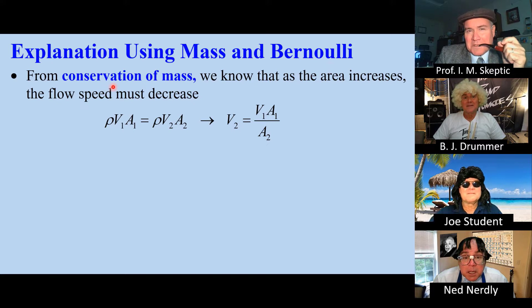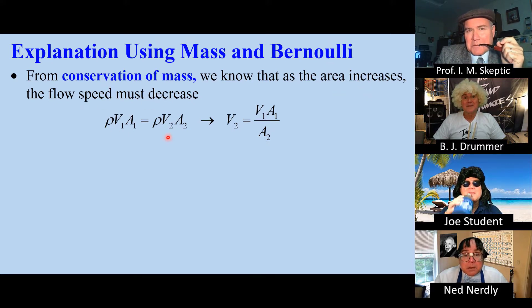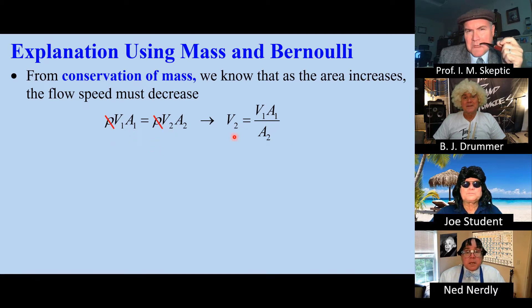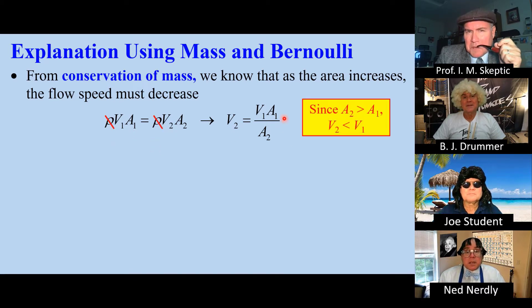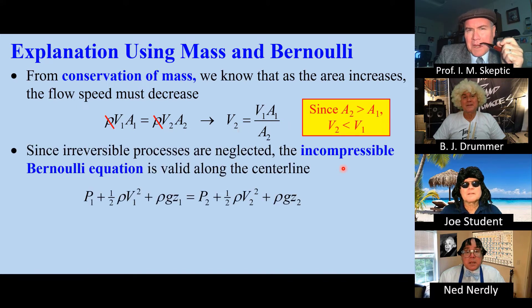From conservation of mass, as area increases, flow speed decreases. Here's the equation. For incompressible flow, density drops out, and we solve for V2. Since A2 is greater than A1, V2 has to be less than V1.